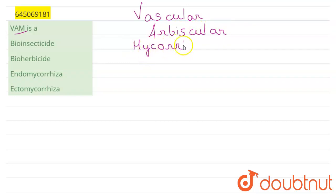The full form of VAM is vascular arbuscular mycorrhiza, and these are a symbiotic association between a fungus and a vascular plant. So we know that vascular plants are the higher plants which are well differentiated: roots, stems, and leaves.